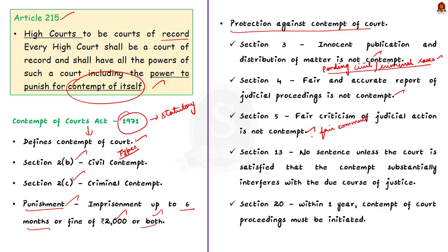Under Section 13, no court shall impose a sentence unless it is satisfied that the contempt substantially interferes with the due course of justice. Finally, Section 20 places a time limit to initiate contempt of court proceedings — a limit of one year from the date on which the contempt is alleged to have been committed. After this period, contempt of court proceedings cannot be initiated.